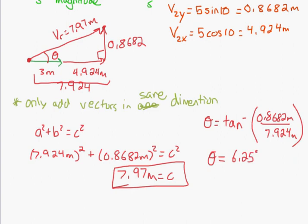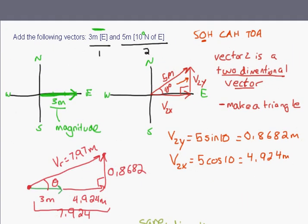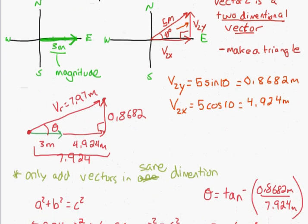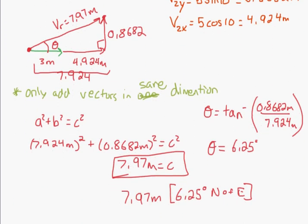So my final answer will basically be 7.97 meters, 6.25 degrees north of east. Now let's just make sure my significant digits are okay. Well, not really. I had the 3 meters and the 5 meters. If I were to do this question, I would have 3.0 and 5.0. But for the purpose of this question, that should be good.